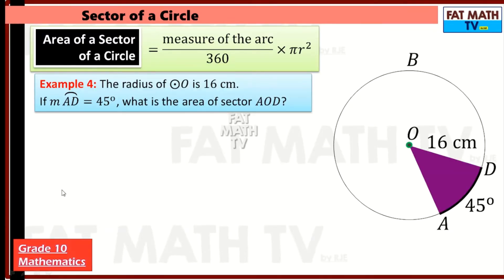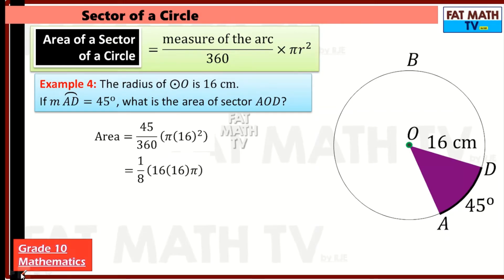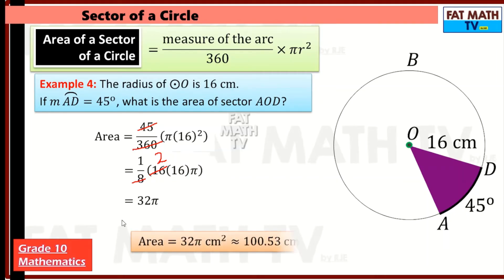Example four: the radius of circle O is 16 centimeters, and the measure of arc AD is 45 degrees. What is the area of sector AOD? Measure of the arc: 45 over 360 times pi r squared. Simplify by dividing by 45 — numerator becomes 1, denominator becomes 8. Then 16 squared is 16 times 16; canceling the 8 leaves 2. So 1 times 2 times 16 times pi equals 32pi square centimeters, or approximately 100.53 square centimeters.